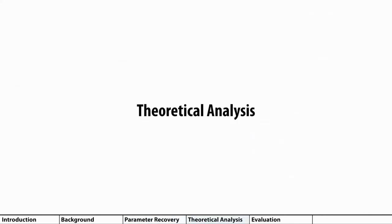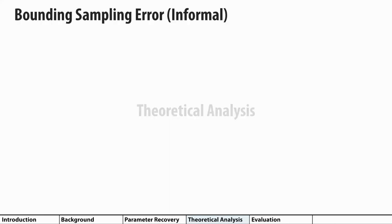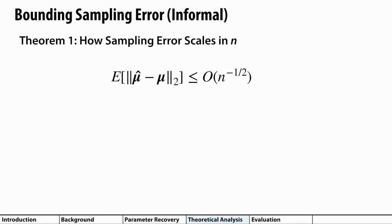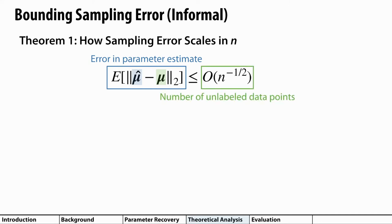Now I'll briefly summarize our three main theoretical results. See our paper for more details or come find us at the Q&A session. First, let's look at the error in our parameter estimate. Here's an informal presentation of theorem one from our paper. On the left, we're looking at mu hat, which is our estimated accuracy parameters and mu, the true accuracy parameters. The left side of this equation expresses the error in the parameter estimates, which is highlighted in blue. On the right side, we have an expression in the number of unlabeled data points that we performed the parameter recovery procedure on. So theorem one tells us that our sampling error scales in the inverse of the square root of the number of unlabeled data points.